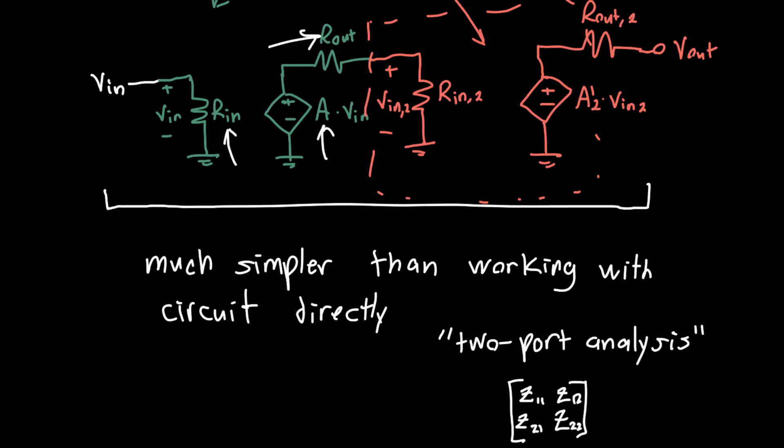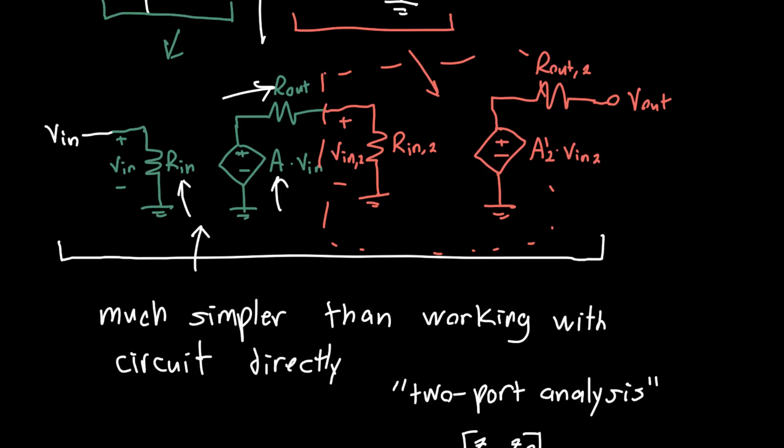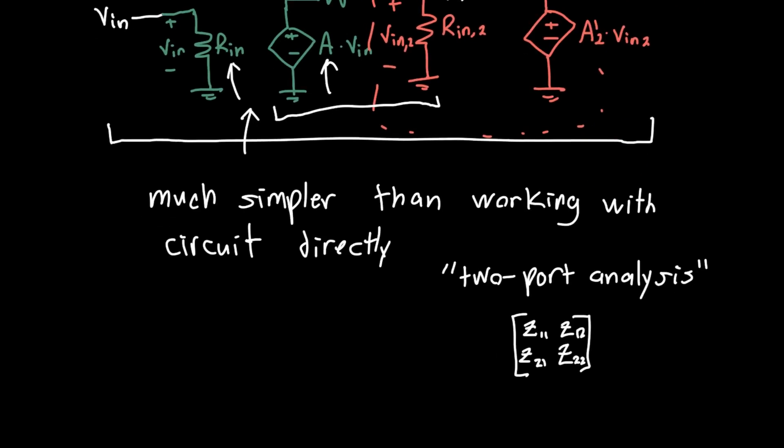And also very unnecessary unless you're dealing with microwave amplifiers, for example. And this is a much simpler way of doing things. So as you can see, the interaction between these two amplifiers is just modeled by a simple voltage divider.